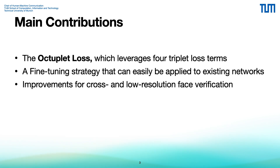Our main contributions are summarized as follows. We propose a novel loss function called Octoplet Loss that leverages four triplet loss terms to capture the relationship between high and low resolution faces. A fine-tuning strategy is introduced which can be easily applied to existing networks to improve their robustness against image resolution while maintaining comparable performance on high resolution images. We also demonstrate that fine-tuning several state-of-the-art networks with our proposed Octoplet Loss leads to significant improvements for cross and low resolution face verification on numerous popular datasets.